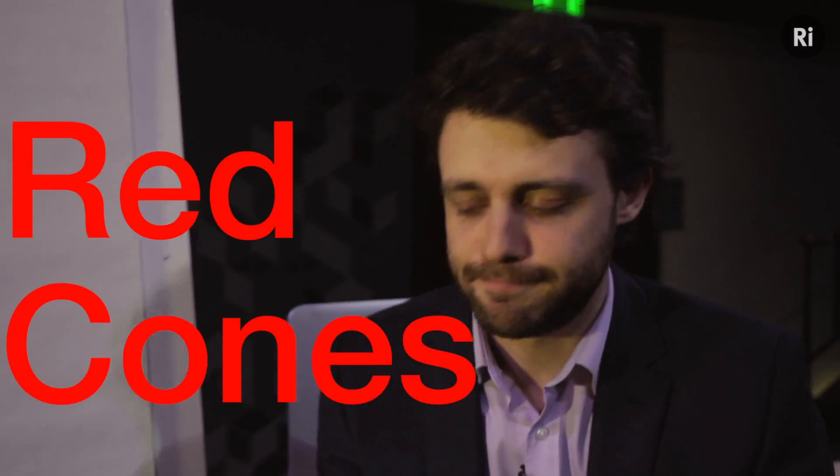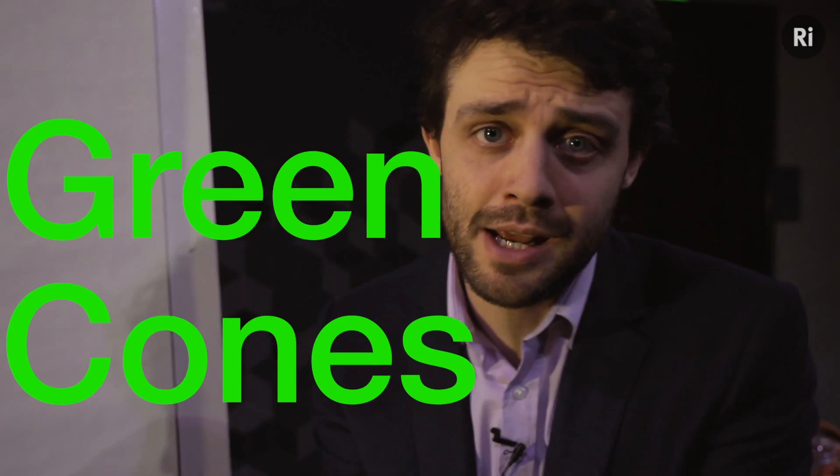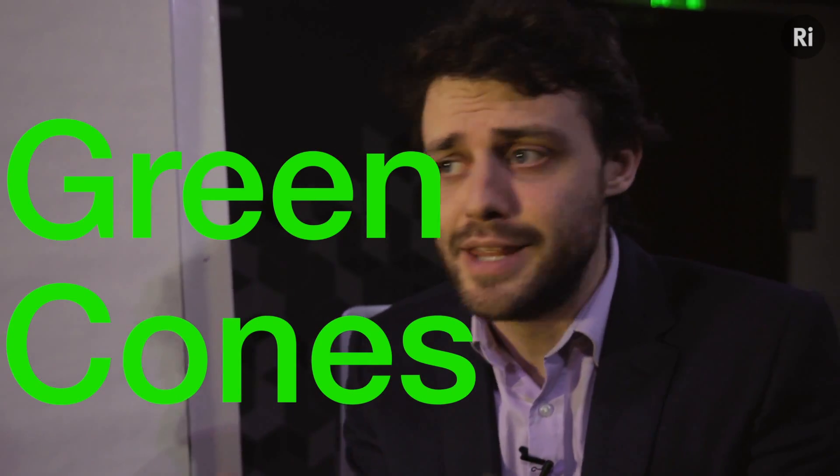So when red light comes into your eyes, there's a set of cones that fire and tell your brain you're looking at something red. So we'd call those the red cones. There's another set of cones that are more sensitive to green, so when there's green light going into your eyes, they fire and send a message to your brain. And there's blue cones as well. So you've got red cones, green cones, and blue cones.